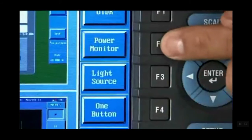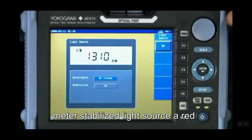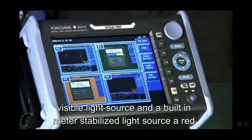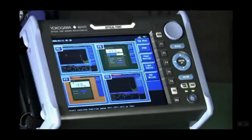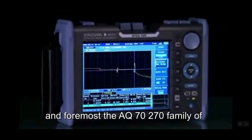They include power meter, stabilized light source, a red visible light source, and a built-in dummy fiber or launch fiber. But first and foremost, the AQ7270 family of OTDRs is exceptional in performance.